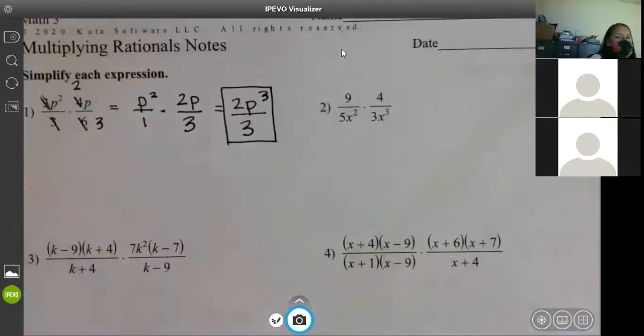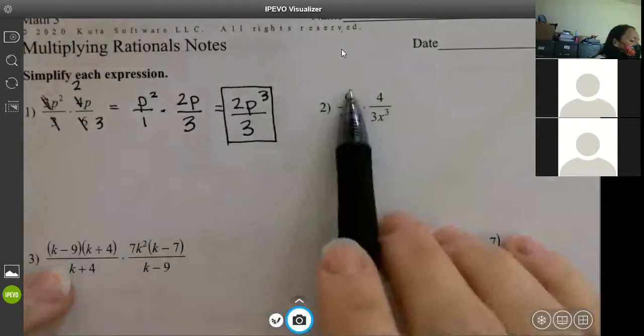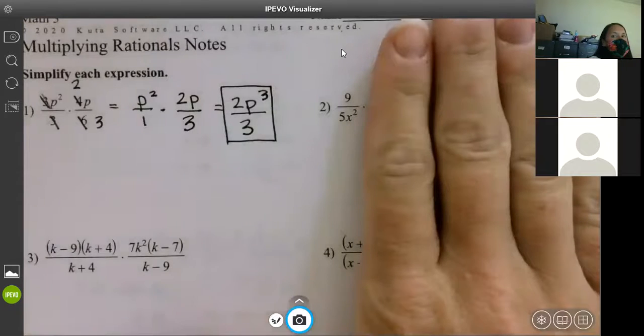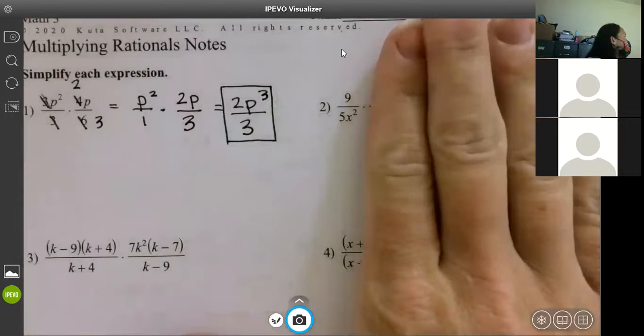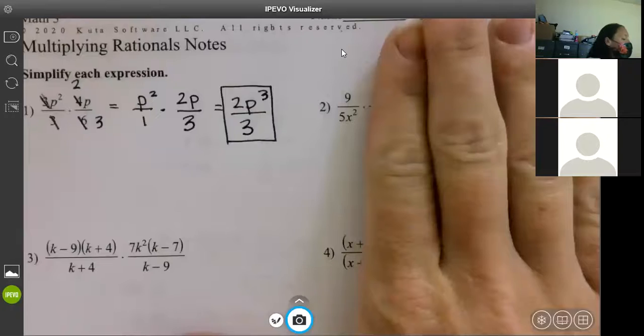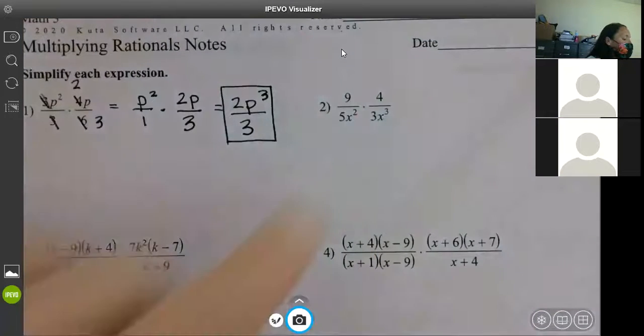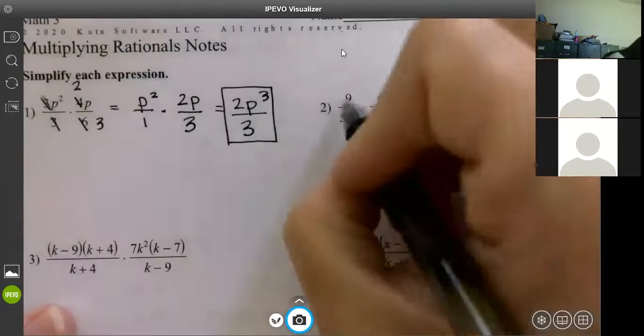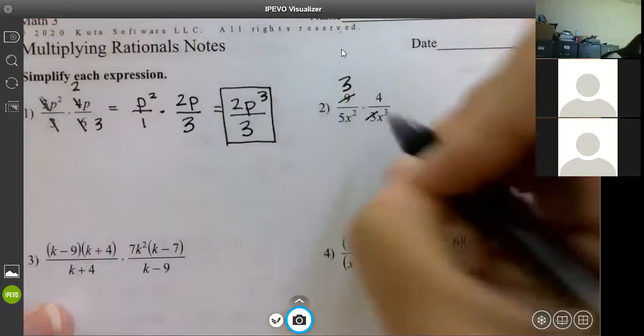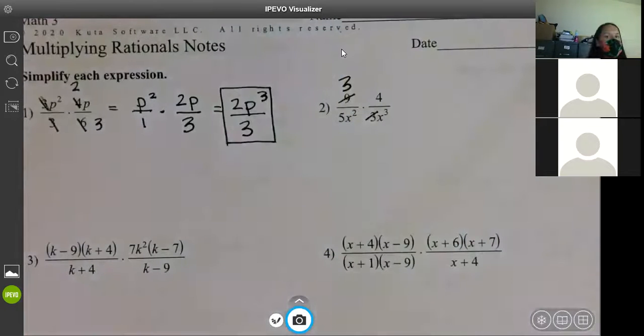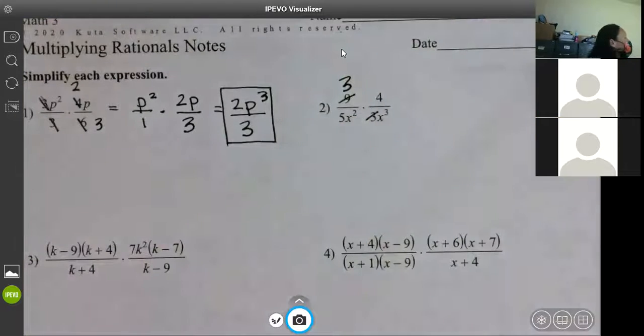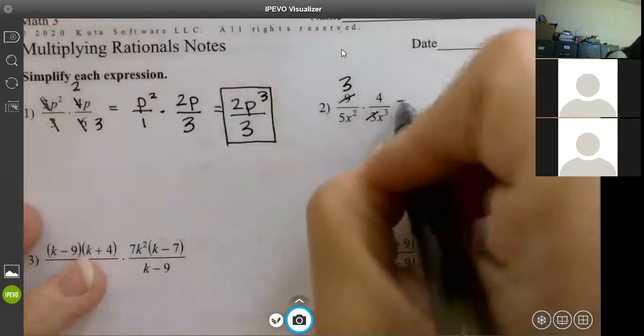If we look at our next one, anything in the first fraction, you're just going to cover this up and look at the first fraction. Anything in the first fraction that will reduce top to bottom? No. Is there anything in the second fraction? No. So now we go diagonal. Will nine and three reduce? Yes. So it reduces to three over one or that three cancels out. If we look the other way, four and five X squared, nothing will cancel out there. So we're simplified as much as possible.